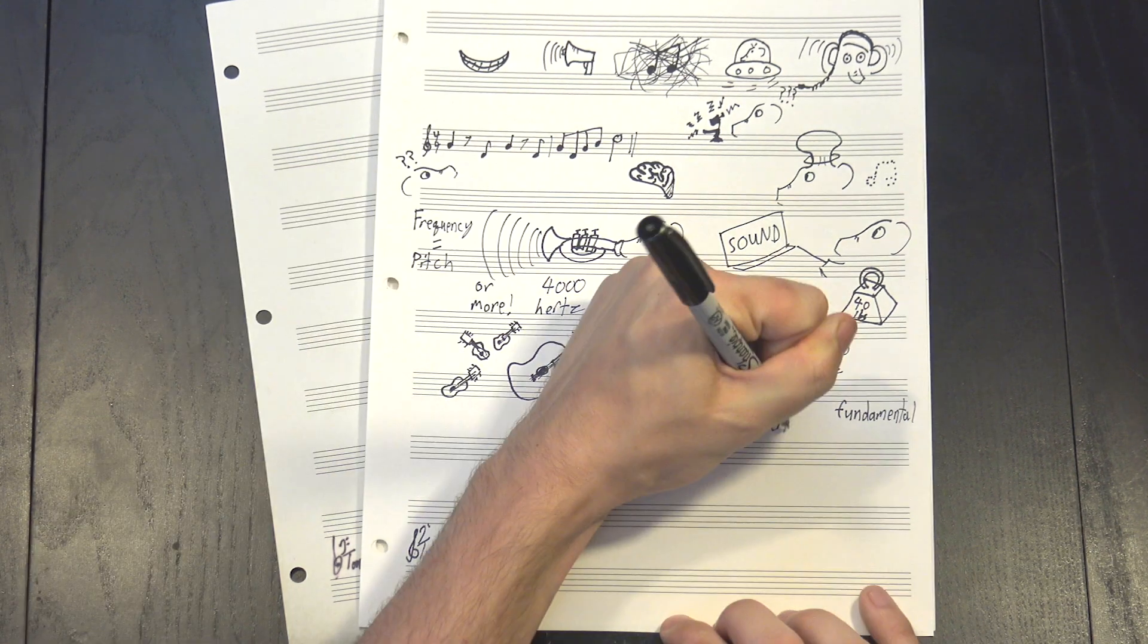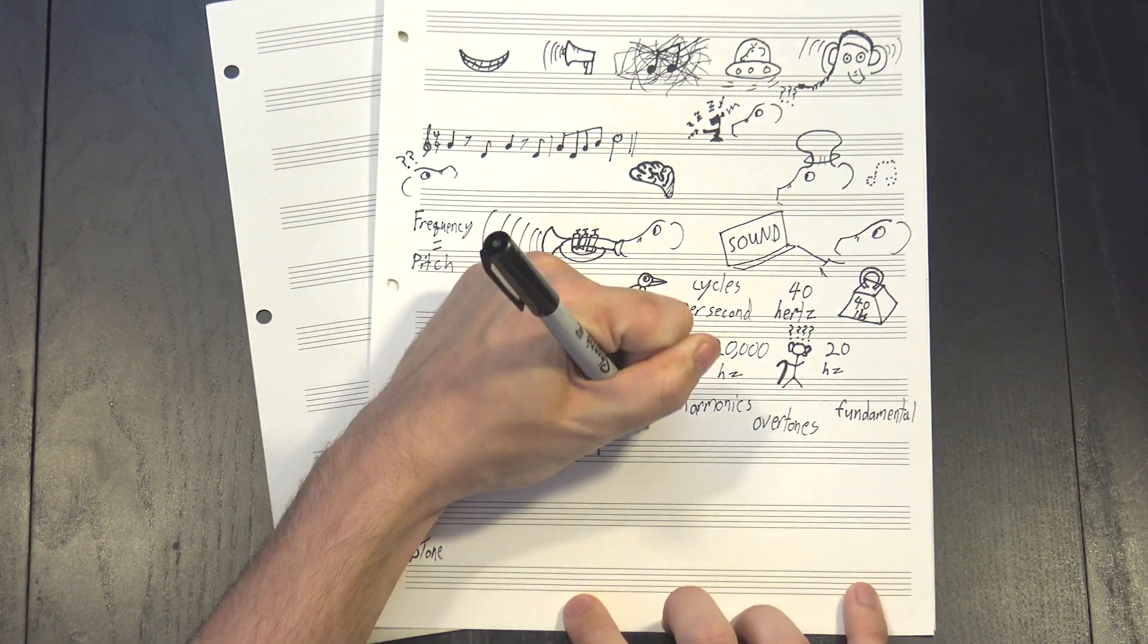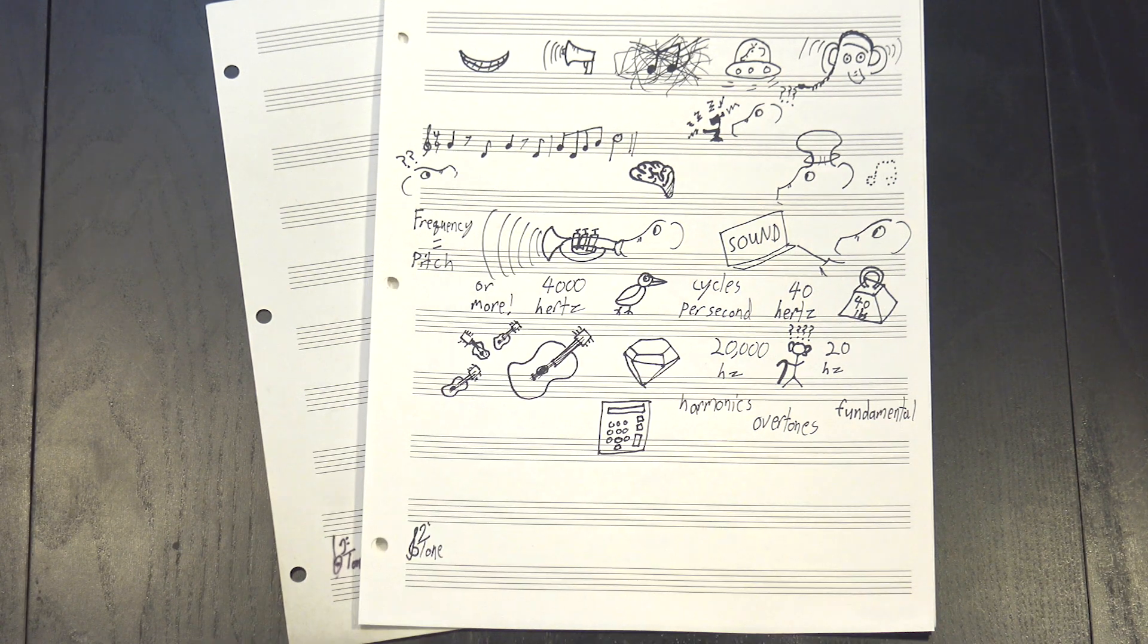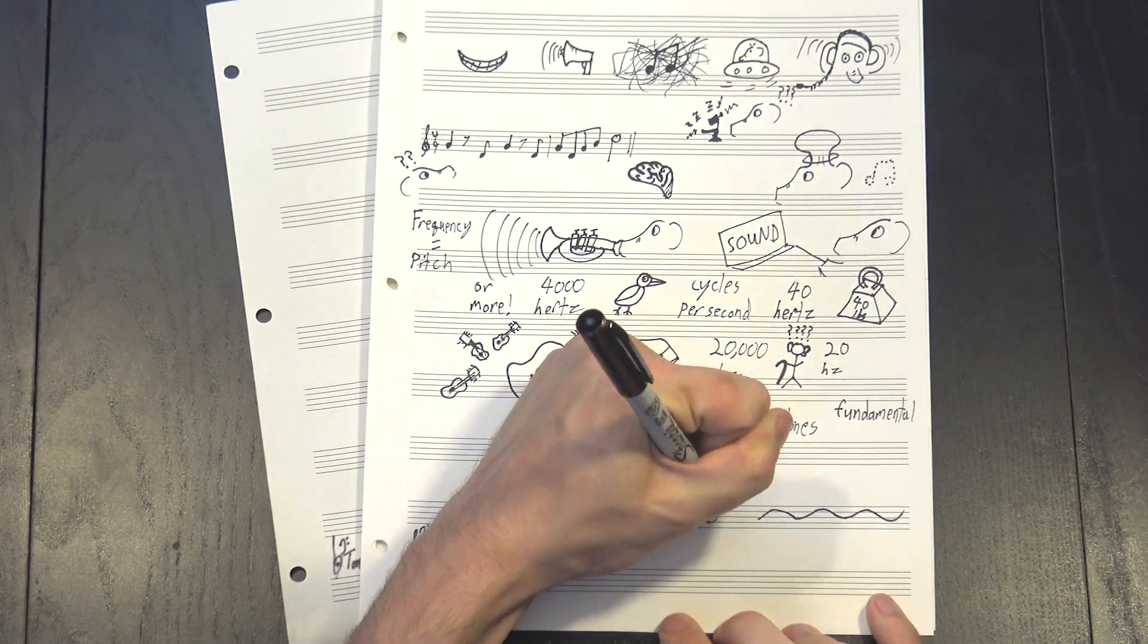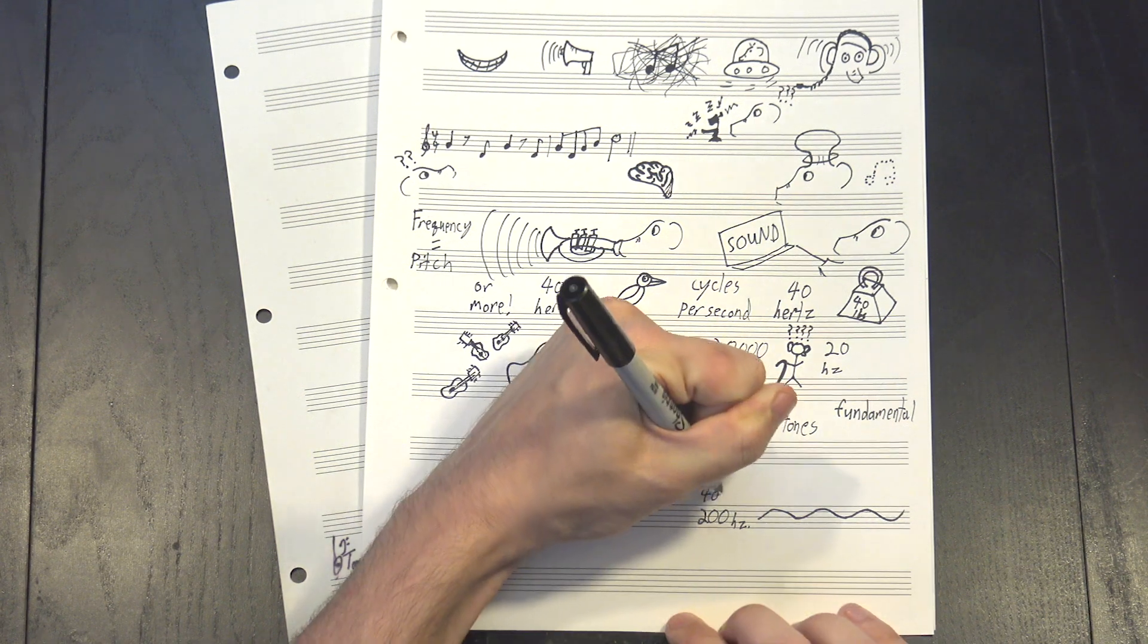These are always multiples of the fundamental. For instance, if you played this note, which has a frequency of 200 Hz, some harmonics might include 400 Hz, 600, 800, or more.